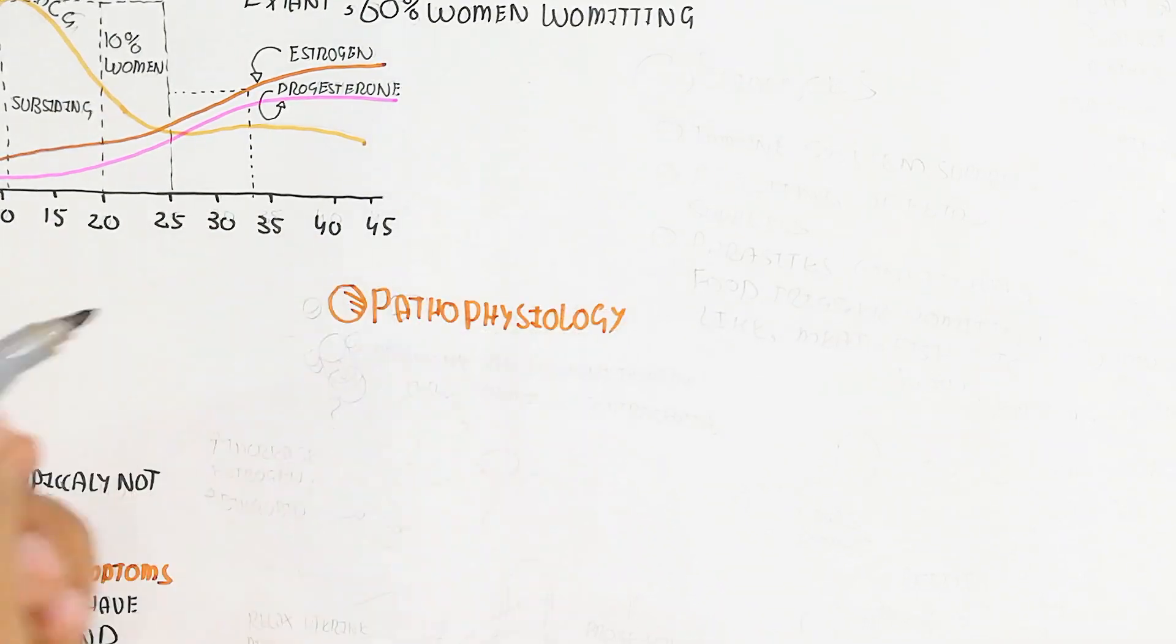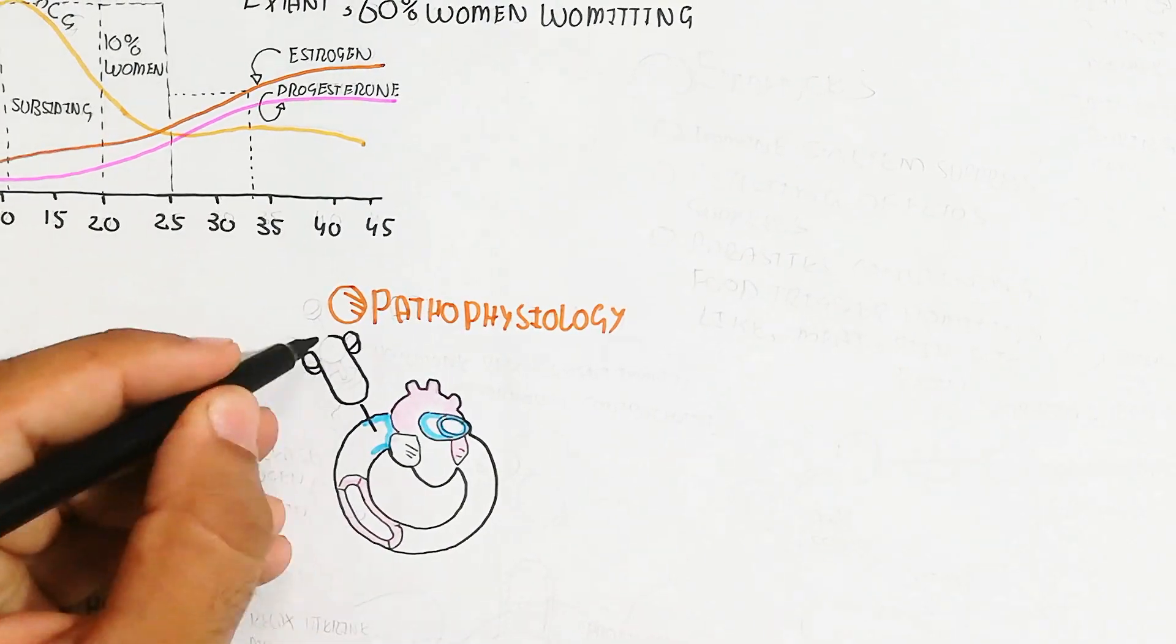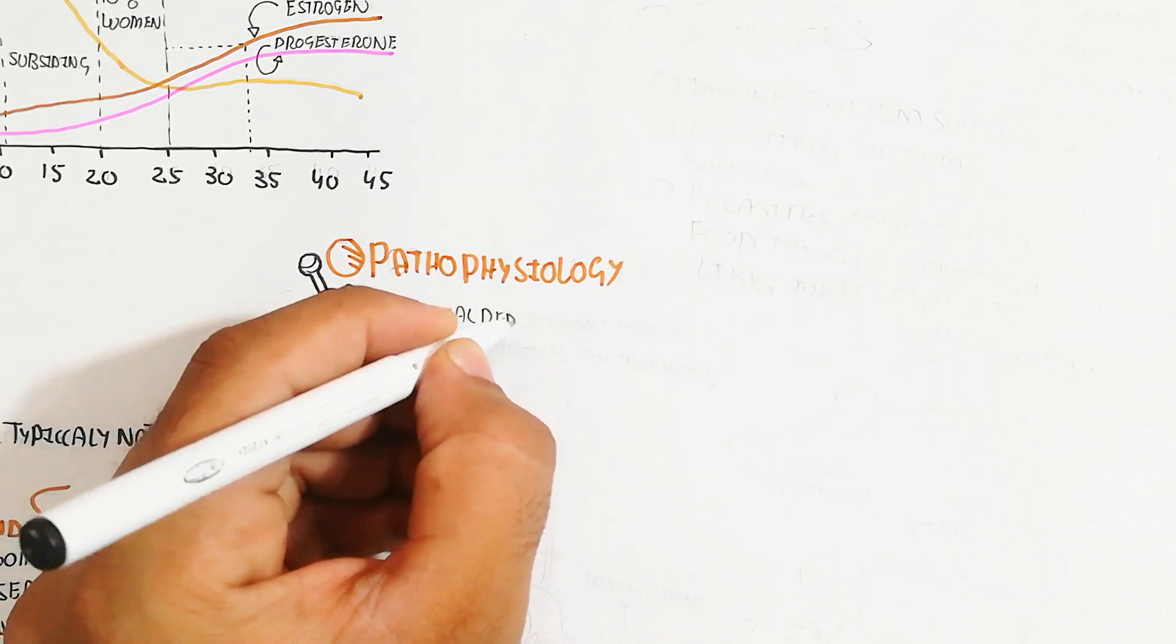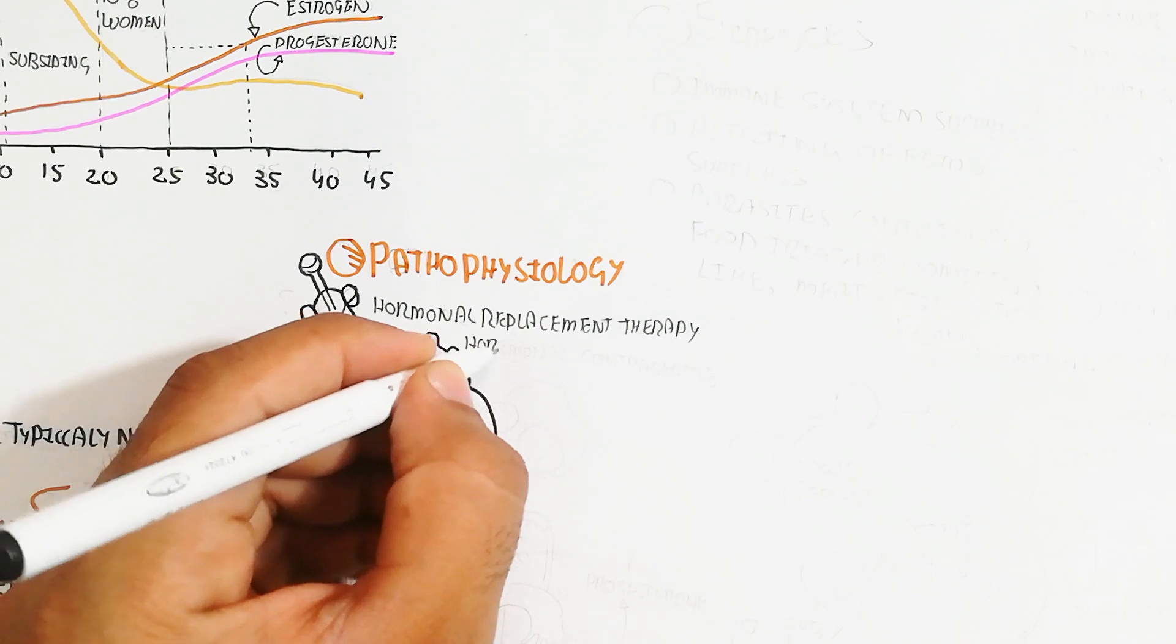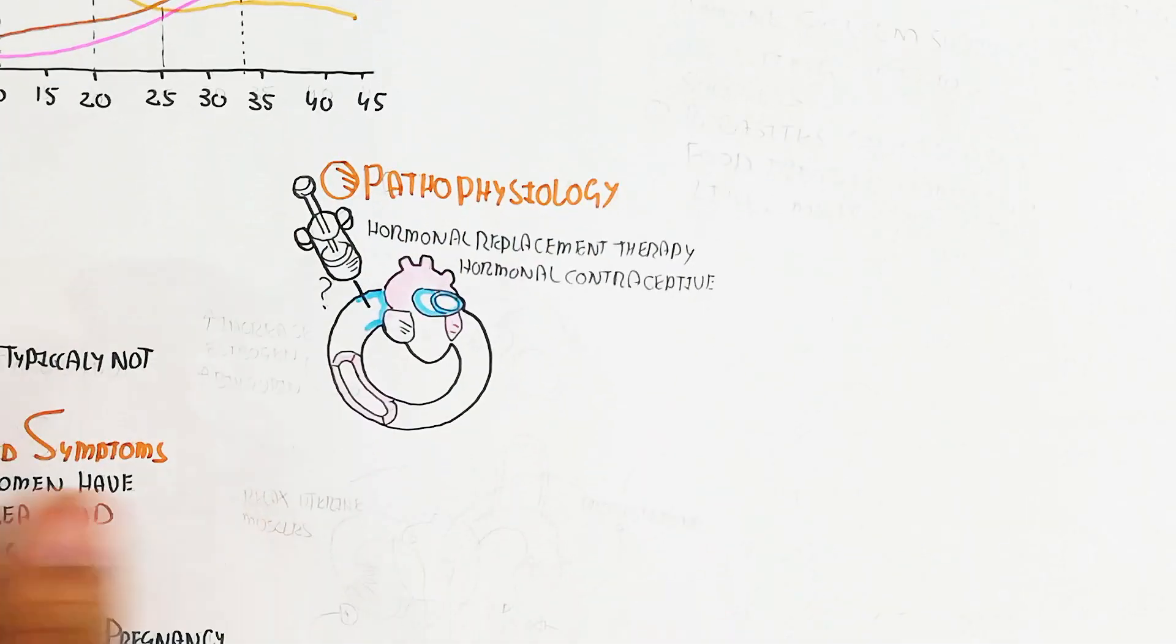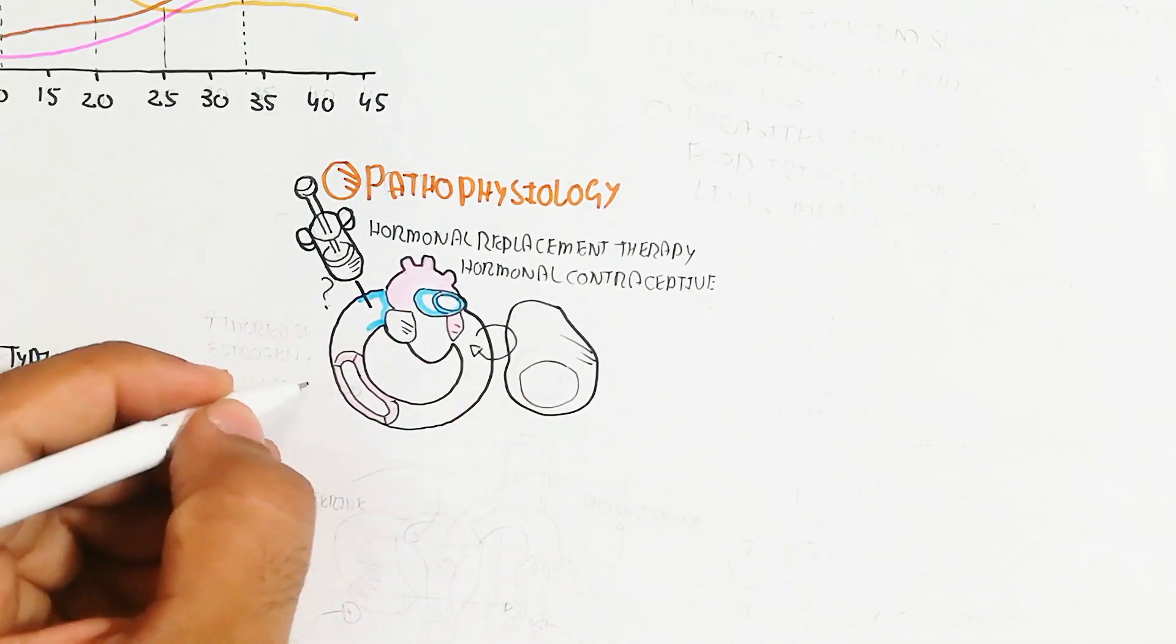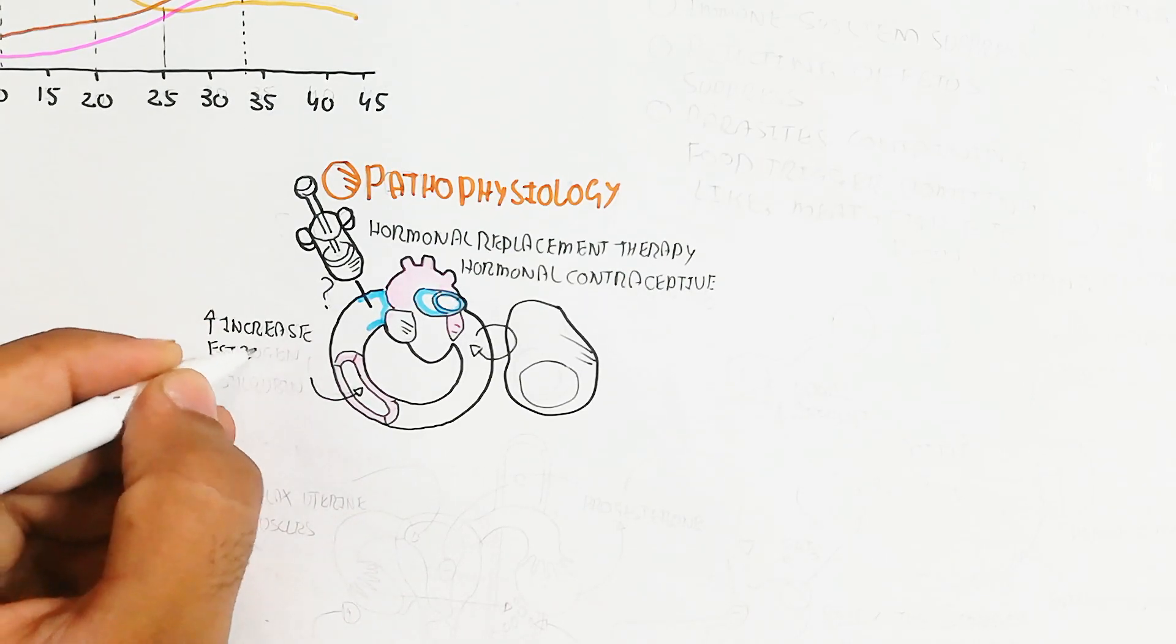The pathophysiology: hormonal replacement therapy and hormonal contraceptive use, which is in the form of injection, increases estrogen and bilirubin, which will lead to changes in physiology and emesis can occur for non-pregnant women also.